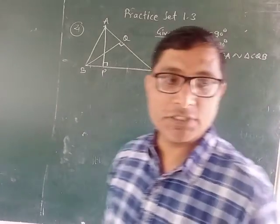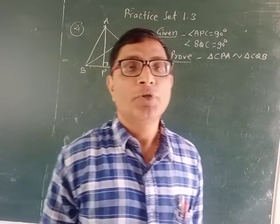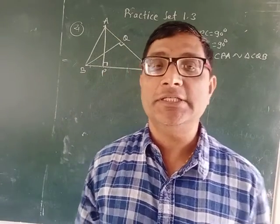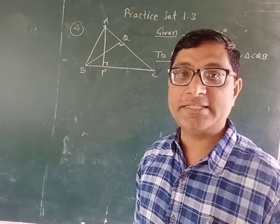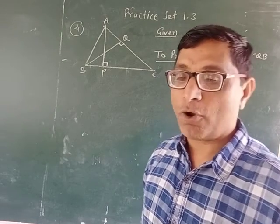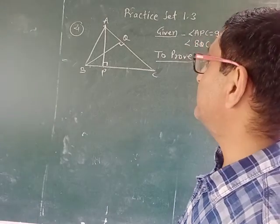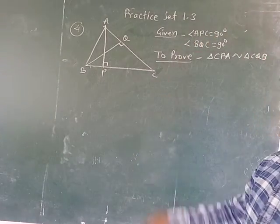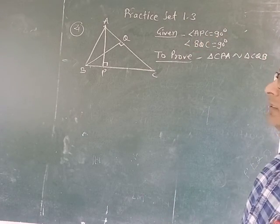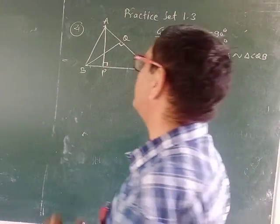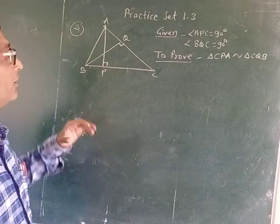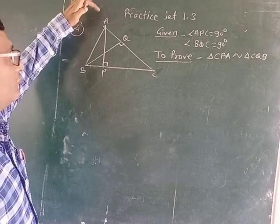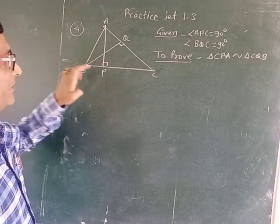Hello friends, today we are going to see the next examples from Practice Set 1.3. In the fourth example, we have a triangle given here — triangle ABC.